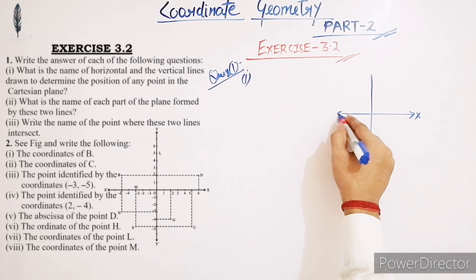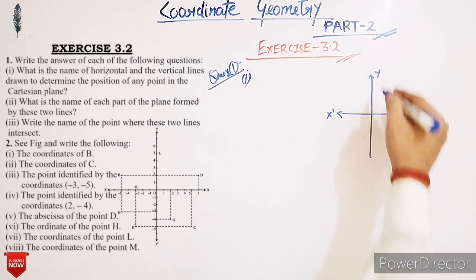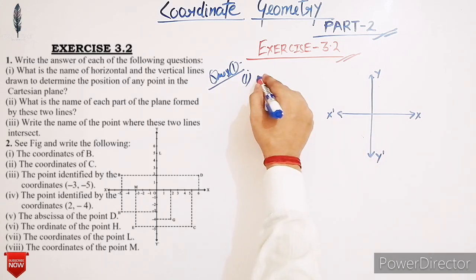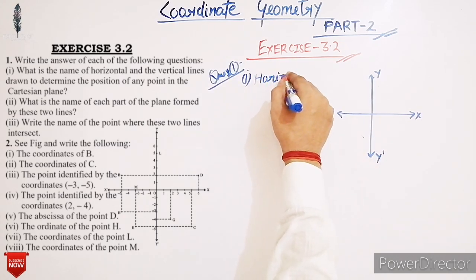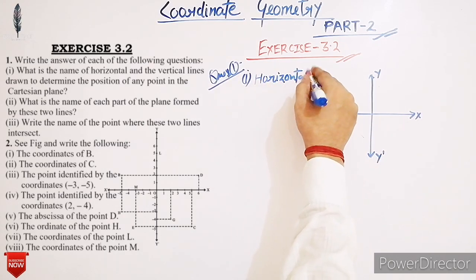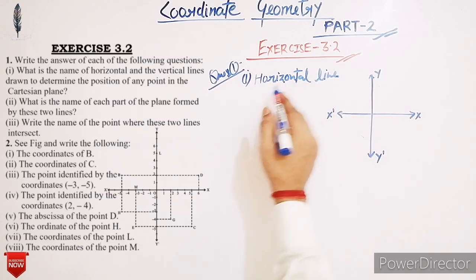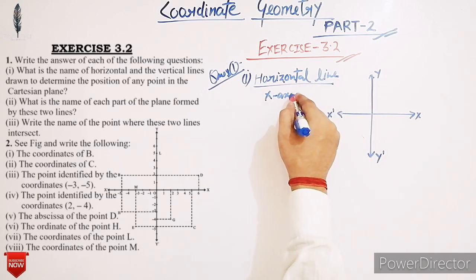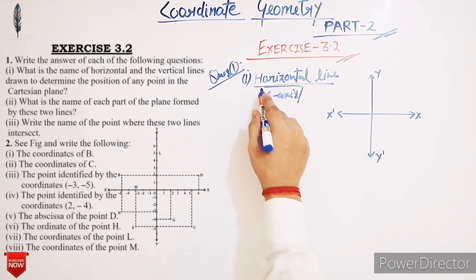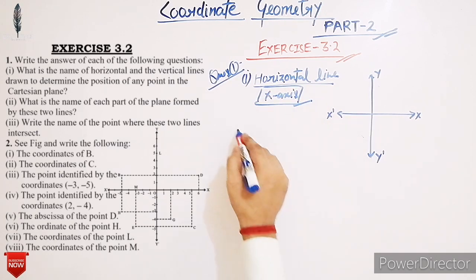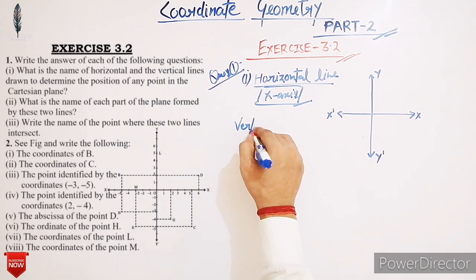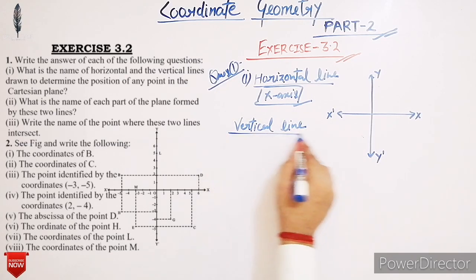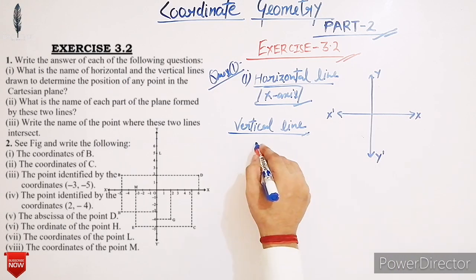Here we have a Cartesian plane — here is the x-axis and here is the y-axis. We can clearly see that the horizontal line is the x-axis and the vertical line is the y-axis. So the horizontal line is called the x-axis and the vertical line is called the y-axis.